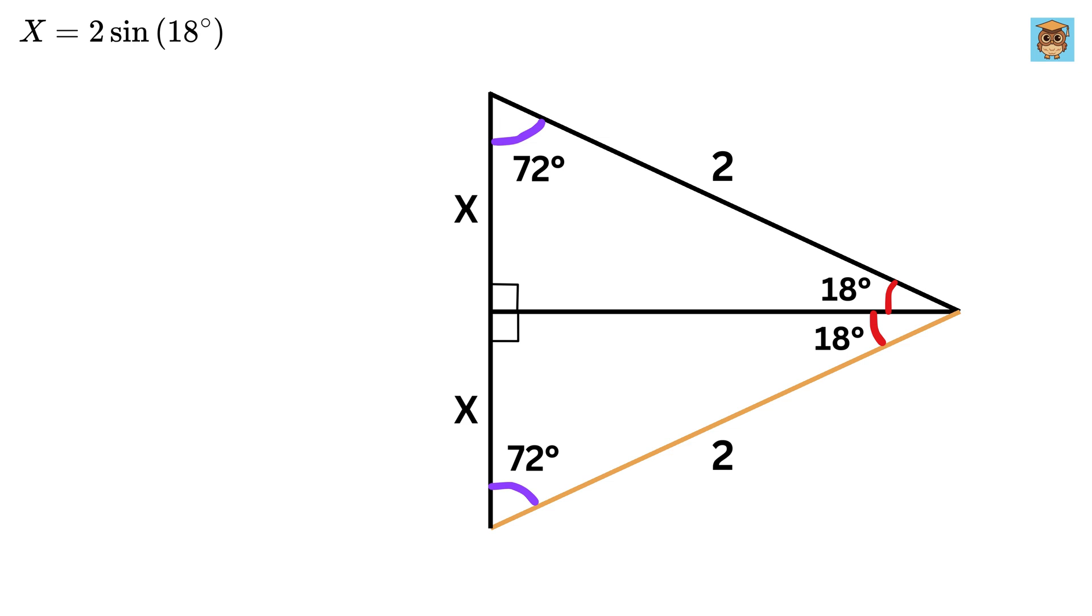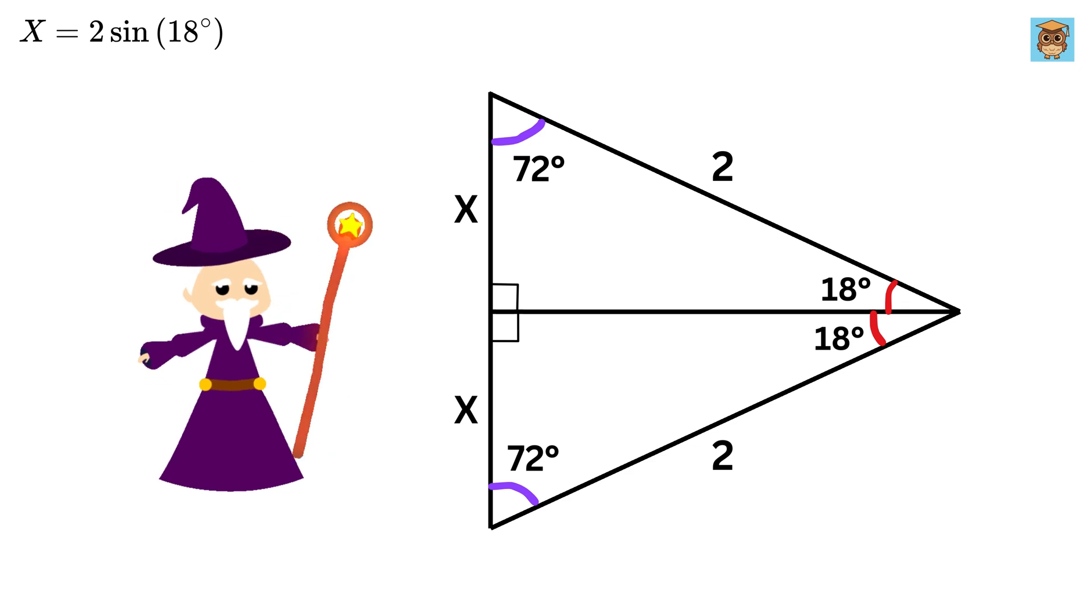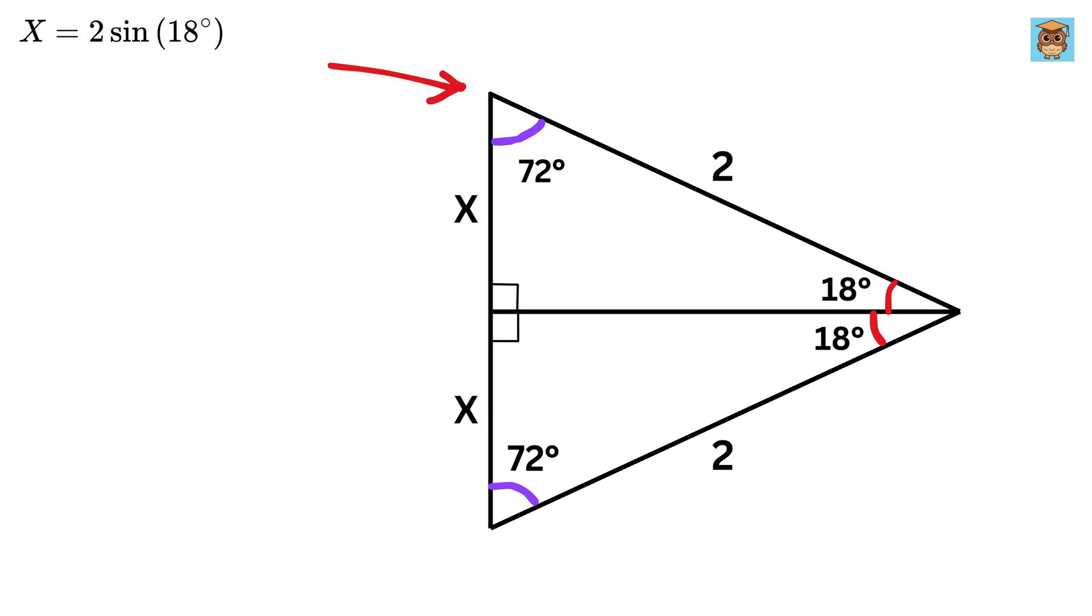Now here comes the real magic. From this point, let us draw this line which will be an angle bisector of this angle, so both these angles will be equal to 72 over 2, or 36 degrees.